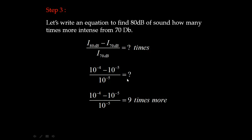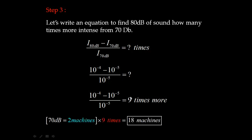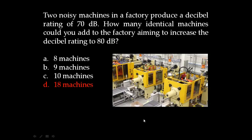Since 70 decibel corresponds to 2 machines, and 80 decibel is 9 times more intense, we need 9 times more machines. So 2 times 9 equals 18 machines total. That means the answer is option D: 18 machines.